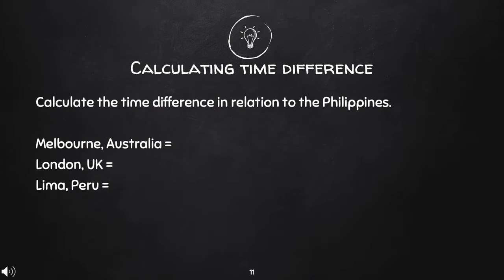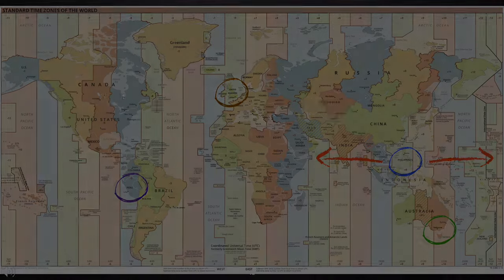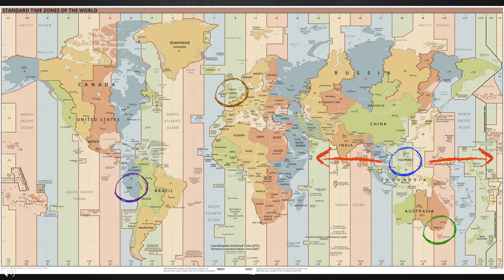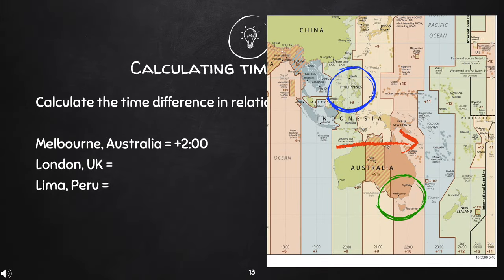This time, we will calculate the time difference between countries or cities. Calculate the time difference of the following cities in relation to the Philippines: Melbourne, Australia; London, UK; and Lima, Peru. Let us look at the time zone map. Encircled in blue is the Philippines, which belongs to plus 8 UTC. Encircled in green is Melbourne, Australia; brown is London, UK; and purple is Lima, Peru. Let us first calculate the time difference between Melbourne, Australia, and the Philippines.